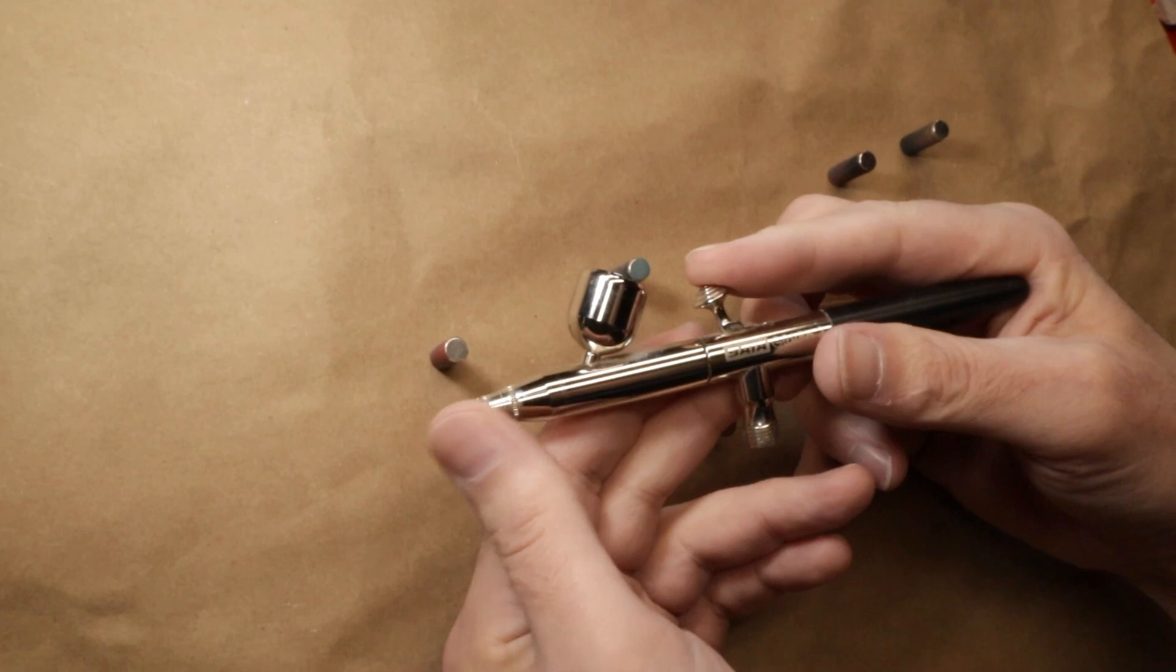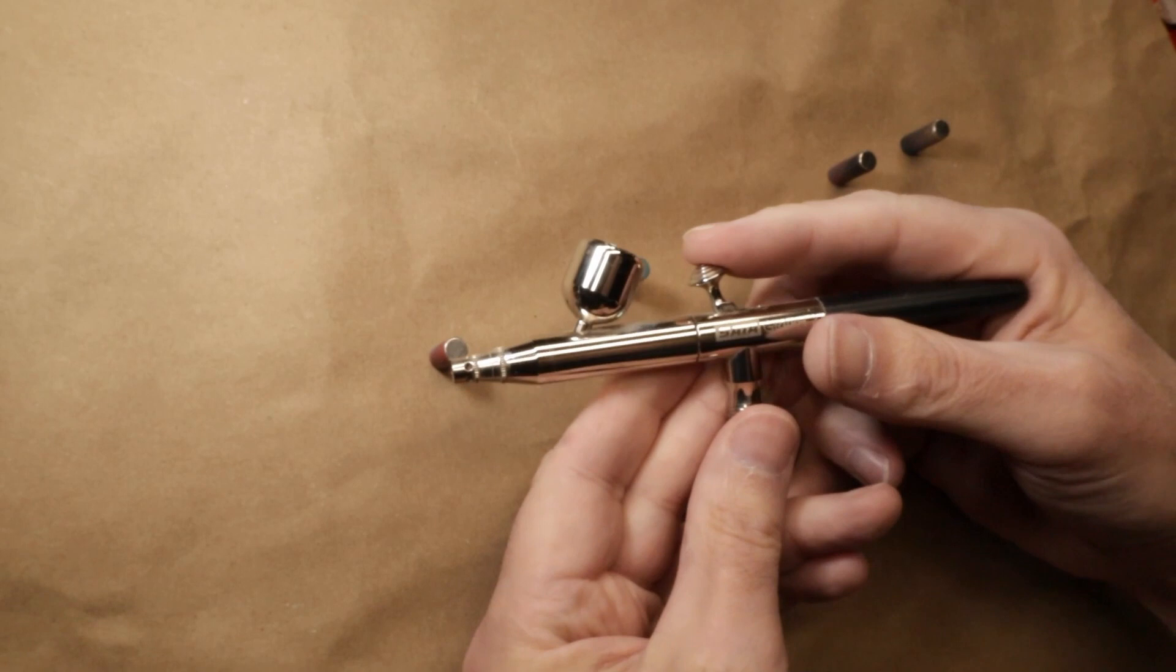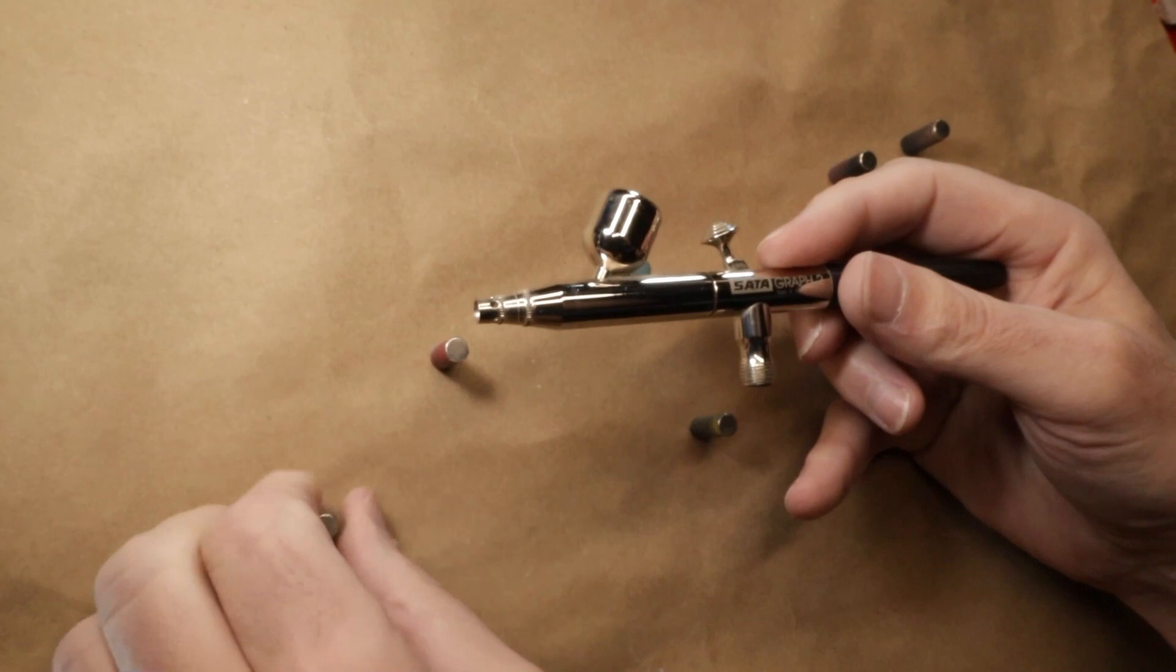A single action will only have the control of air. The paint flow control is usually a separate part of the airbrush, usually up at the front, but again they're rare now so you don't have to really worry about running into them. You really want a double action - you want that push down for air and then pull back and forth for the amount of paint.